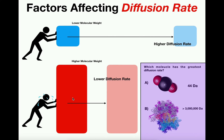The heavier the block, the lower its rate of movement — they have an inverse relationship. This analogy works well for explaining how particles diffuse with different molecular weights. The smaller block represents a substance with a lower molecular weight, which diffuses much faster. So lower molecular weight equals a higher diffusion rate, and higher molecular weight means a lower rate of diffusion.